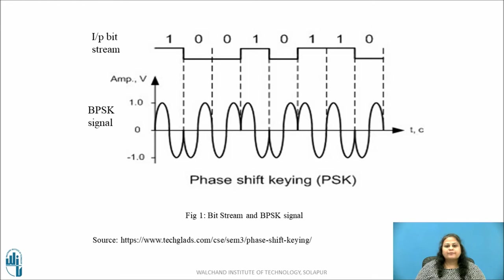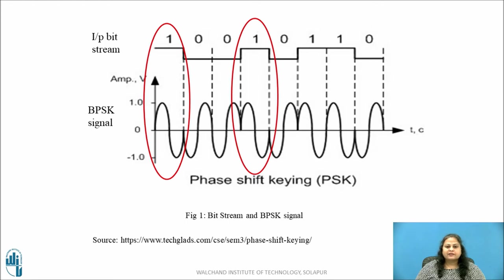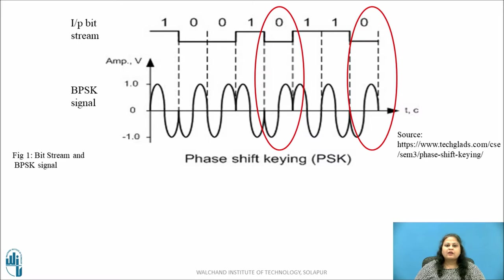The figure shows the PSK signal representation for a given input bit string. As seen, whenever the input bit is 1, the output PSK signal has a 0 degree phase shift, and whenever the input bit is 0, the output PSK signal is 180 degrees phase shifted. Thus, 1 and 0 are represented with two phase angles separated by 180 degrees.